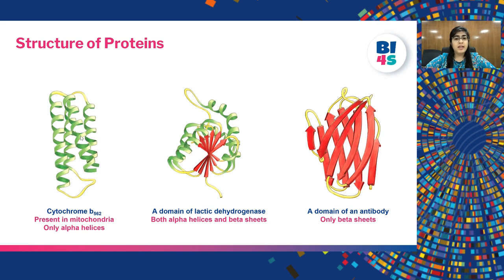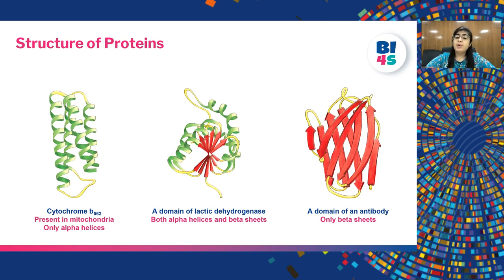These are examples of protein structures made by alpha helices and beta sheets. Looking closely, you can appreciate that a protein can have only alpha helices, or only beta sheets. However, many proteins exist that have both alpha helices as well as beta sheets.